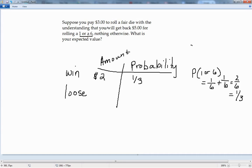Now if we lose, we have lost our $3, so here, whenever we're losing, we're going to do that in negative, so we'd have negative $3. And our probability there, since our probability of winning is 1 third, our probability of losing would be 2 thirds.